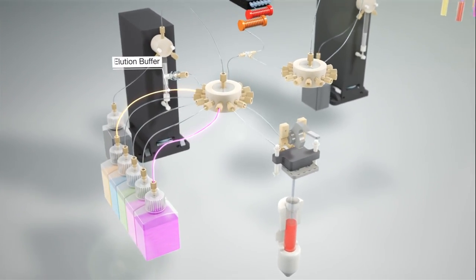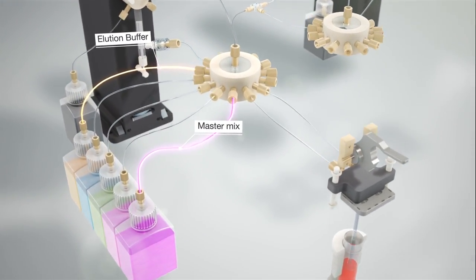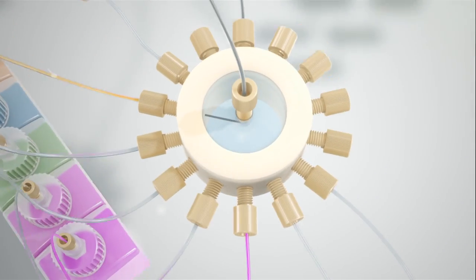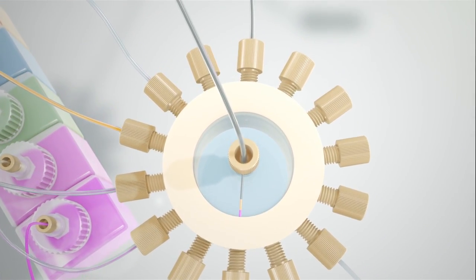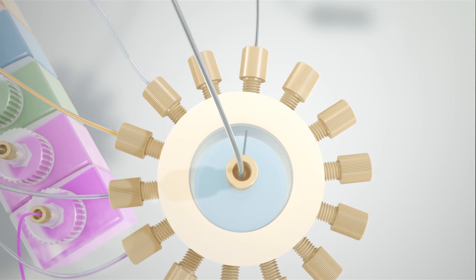The instrument first creates a negative control by combining elution buffer with master mix. This mixture is placed in the line leading to the thermal cycler followed by a slug of oil.